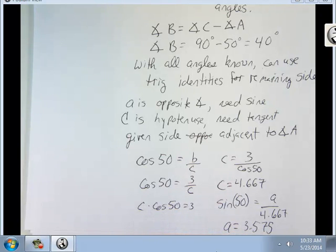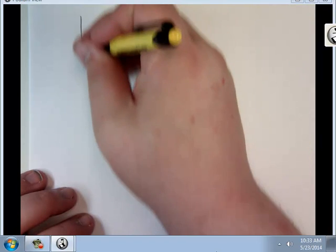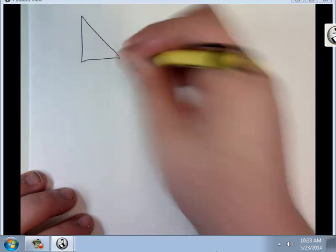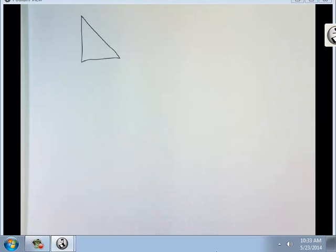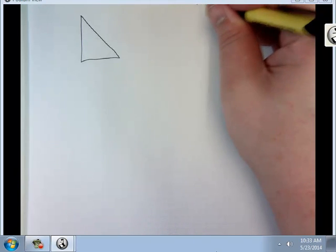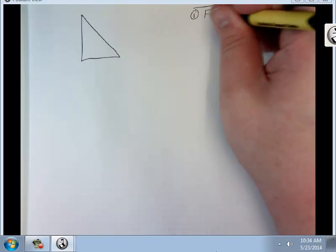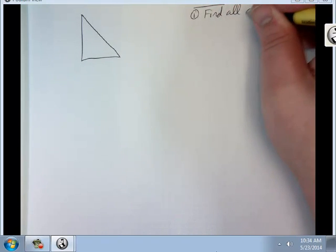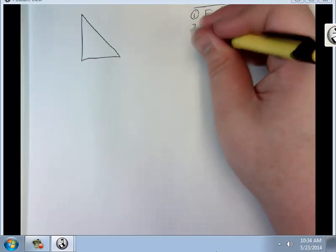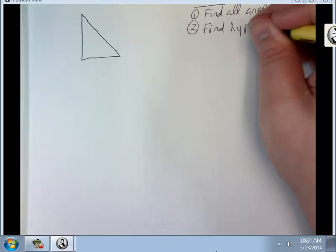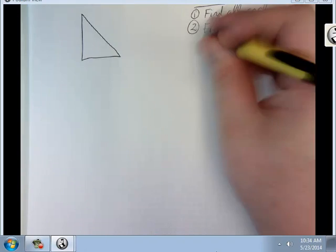I don't like giving a process for these because really, I like these to be a little bit more freeform for trig. But I think it would be better if we do have a process to work with. So first, I would say find all angles. Second, find hypotenuse. Third, find remaining sides.